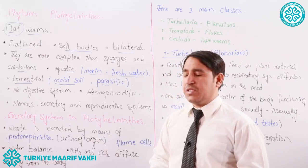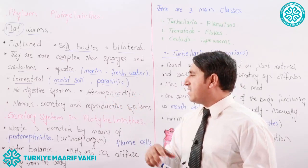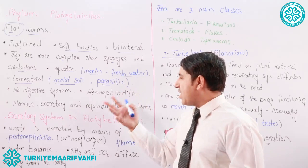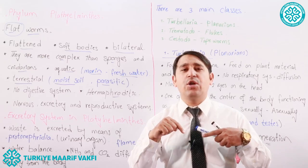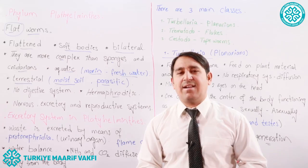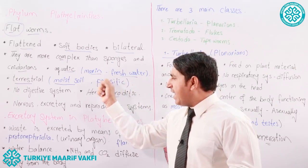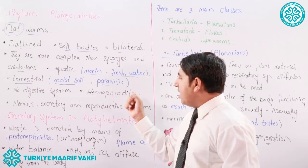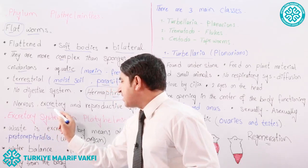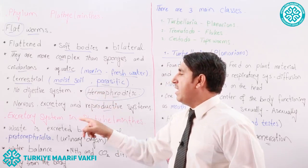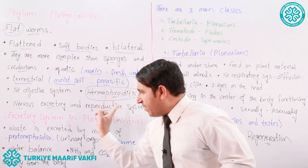There is no digestive system in Platyhelminthes — they have systems and are complex, but no digestive system. They are hermaphroditic, which means the animals consist of both male and female reproductive organs in one organism. The male reproductive organs are the testes and the female reproductive organs are the ovaries. They also have nervous, excretory, and reproductive systems, which is why they are considered complex.